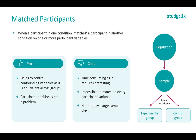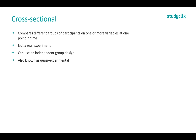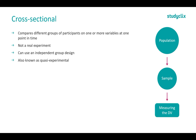Moving on to our non-experimental designs — let's look at cross-sectional. This compares different groups of participants on one or more variables at one point in time. This is not a true experiment because we are not manipulating anything. We can use an independent group design, however we just won't have random allocation. This is also known as quasi-experimental because we're not manipulating the variable — we also do quasi-experiments for things like depression and anxiety. We start with our population, take a sample, and measure the dependent variable. We can take multiple samples — for example a sample of 15-year-olds and a sample of 30-year-olds — and measure the DV in both groups, but we're not manipulating them in any way.